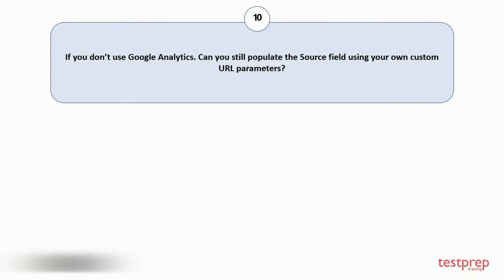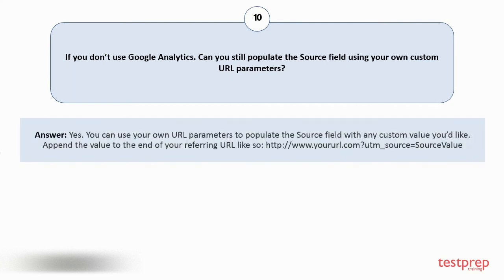Question number ten: If you don't use Google Analytics, can you still populate the source field using your own custom URL parameters? Yes, you can use your own URL parameters to populate the source field with any custom value you'd like — append the value to the end of your referring URL.